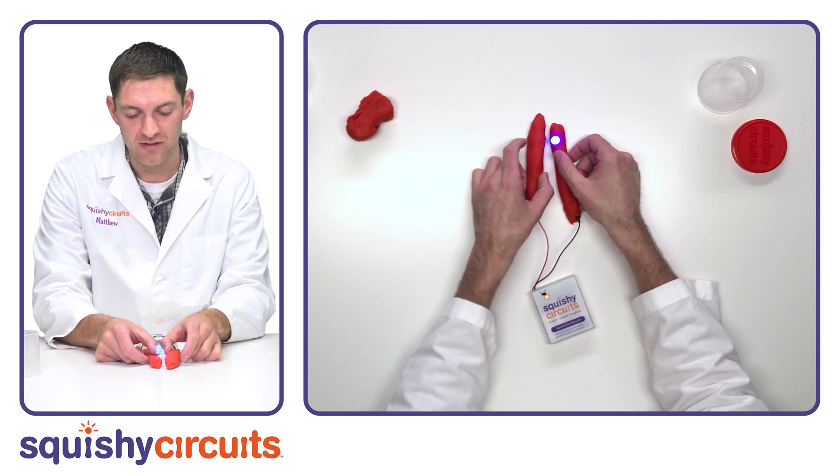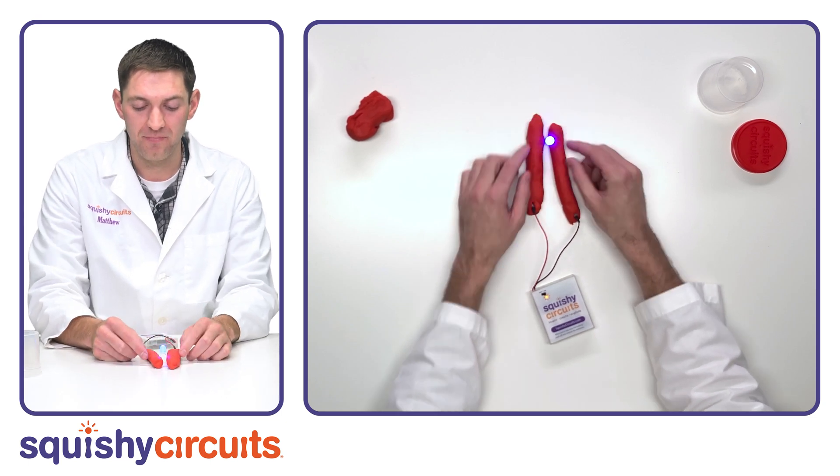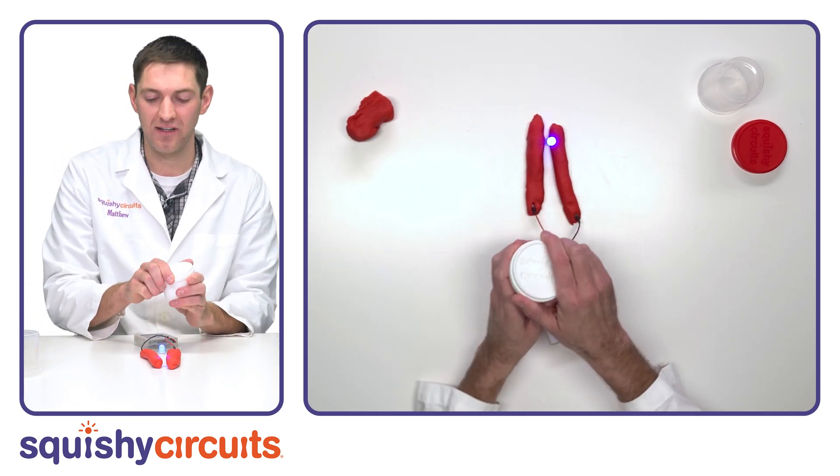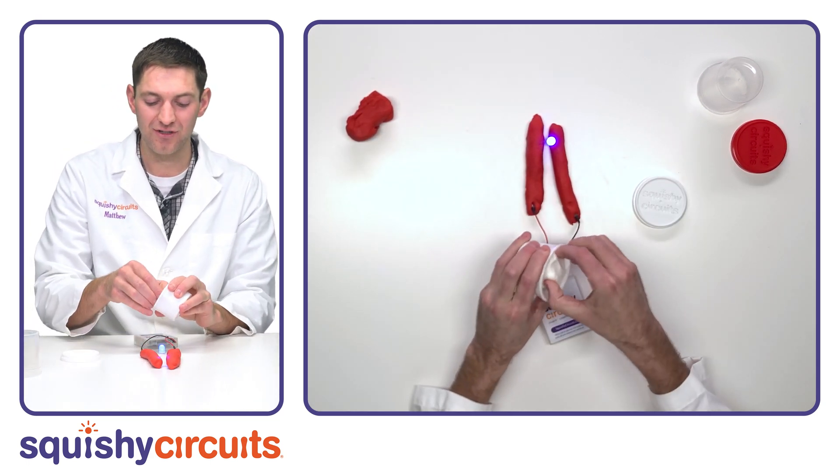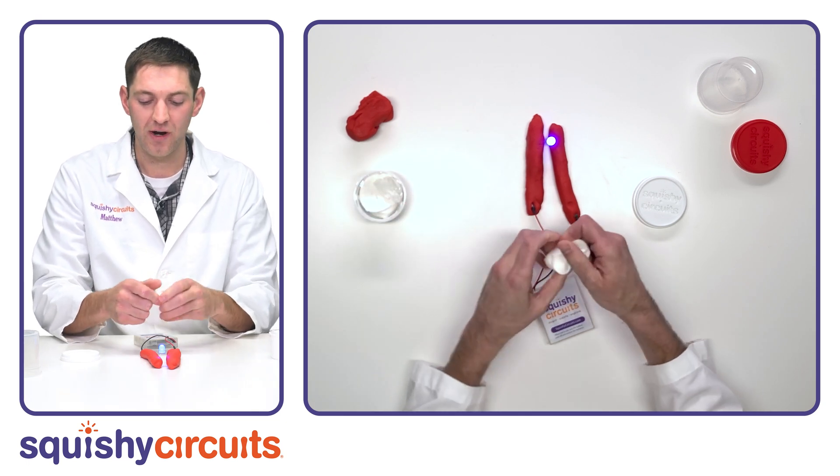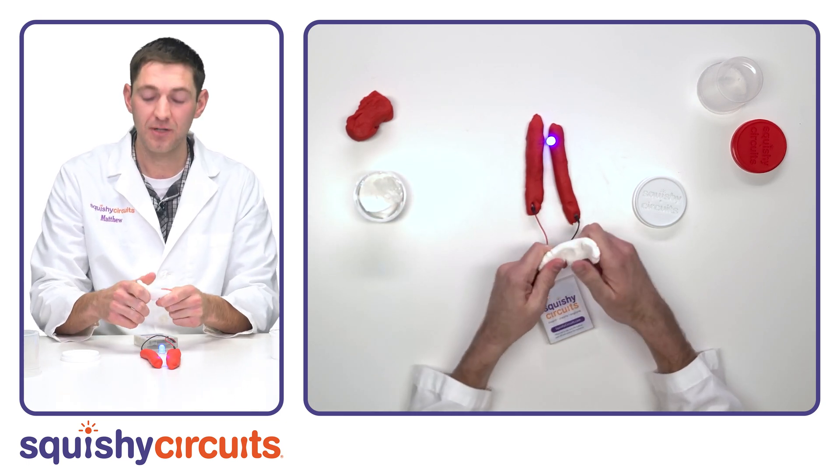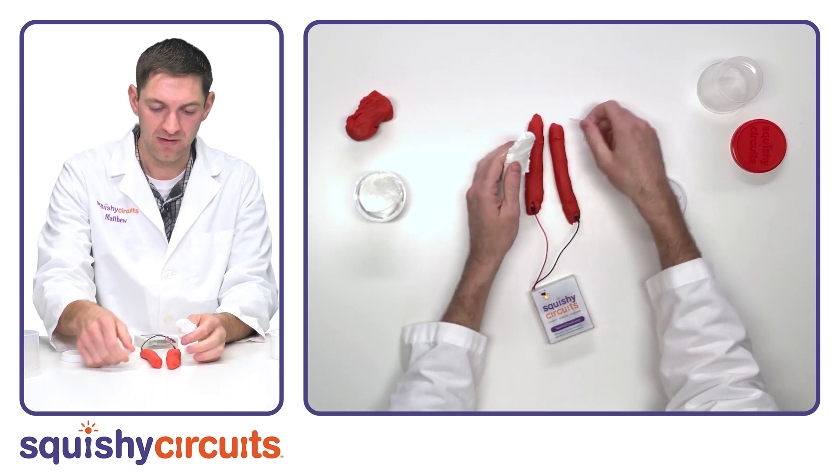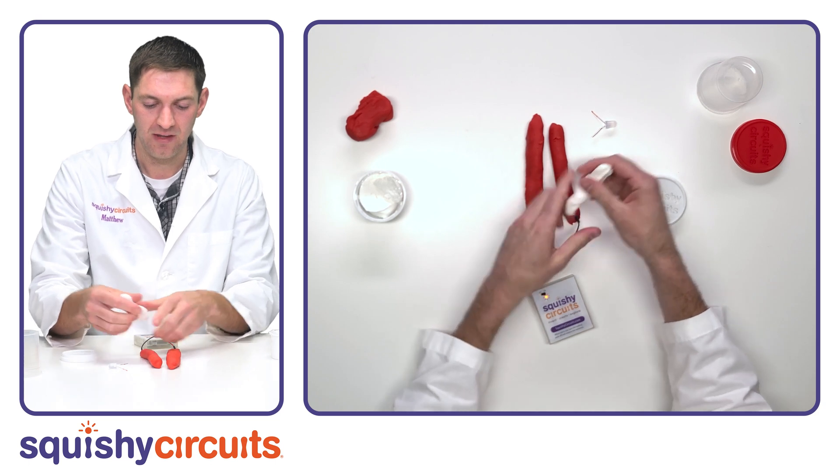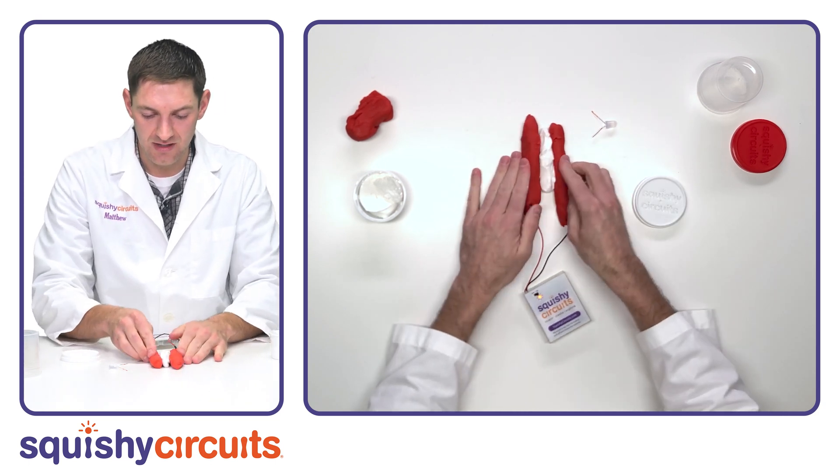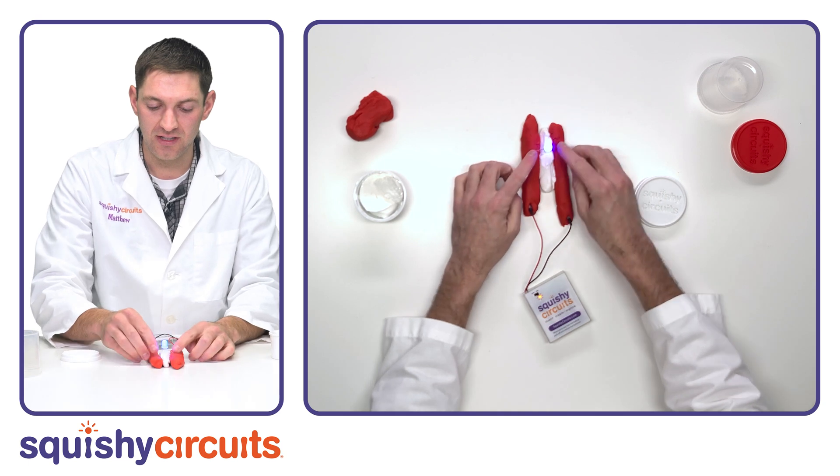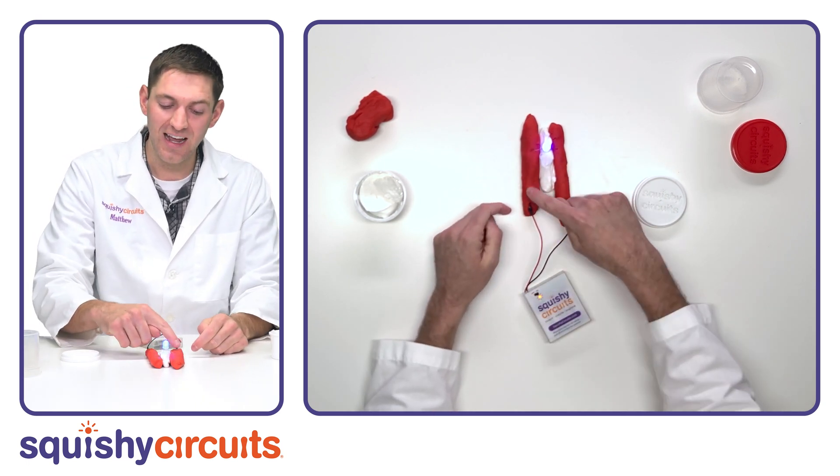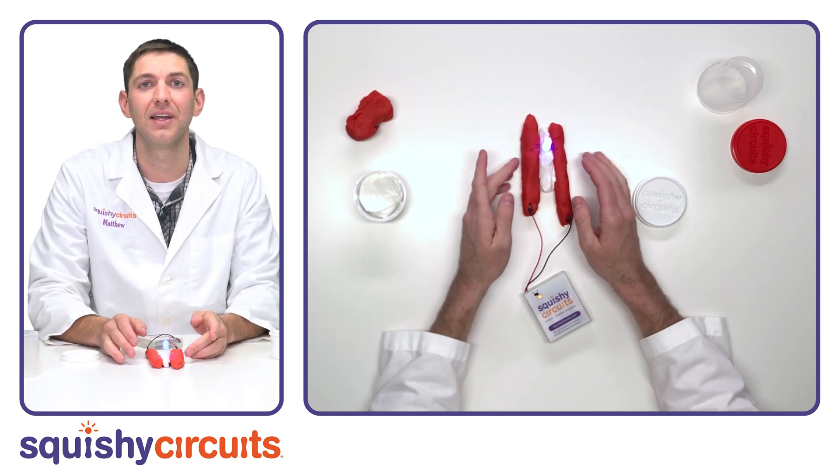To prevent short circuits, we can separate it, and our LED turns right back on. We also have the white insulating dough. Insulators don't let electricity go through them, and so I can use this dough to prevent short circuits. If I put the white dough in between and insert the LED back, it still continues to glow brightly because the electricity has to go around the layer of white, forcing it to go through the LED.